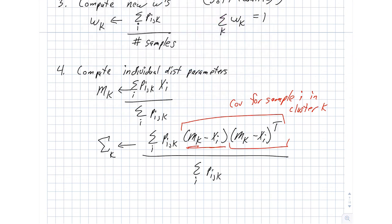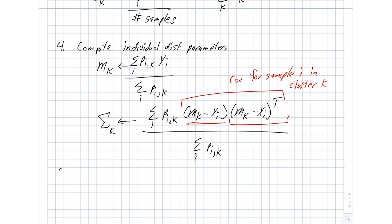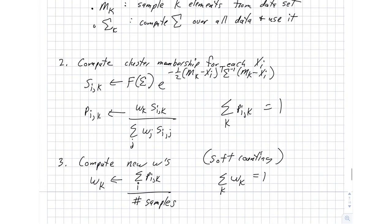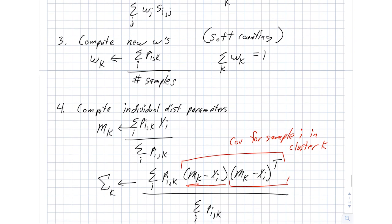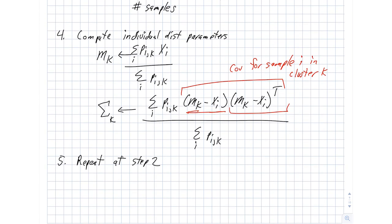The very next step, step five, is repeat at step two. So step two, just to bring us back. Step two is, again, given these new clusters that we've just computed, we then compute new memberships for all of the points. And then we compute our w's, compute the individual distribution parameters, and then we repeat again.